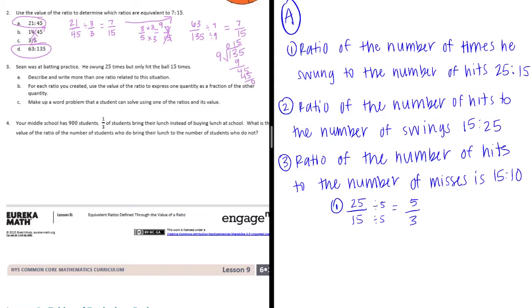We can do the next one. So it was just reversed, 15 over 25. So let's divide by 5 again, and we'll get 3 fifths. So the value of that one is 3 fifths. And the last one, find that value, was 15 to 10. So if we divide those by 5, we get 3 to 2. So the value of that ratio is 3 to 2 for the number of hits to the number of misses.